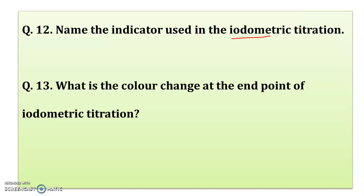What is the color change at the end point of iodometric titration? Like the previous one which was colorless to light pink, in experiment number 2 the color change at the end point is blue to milky white. That is the color change in this iodometric titration.